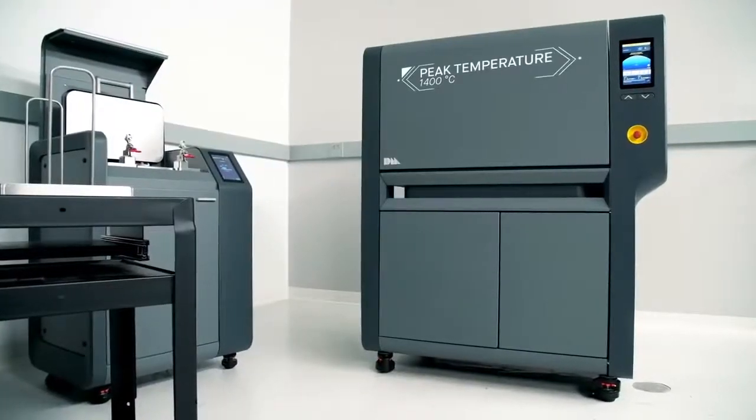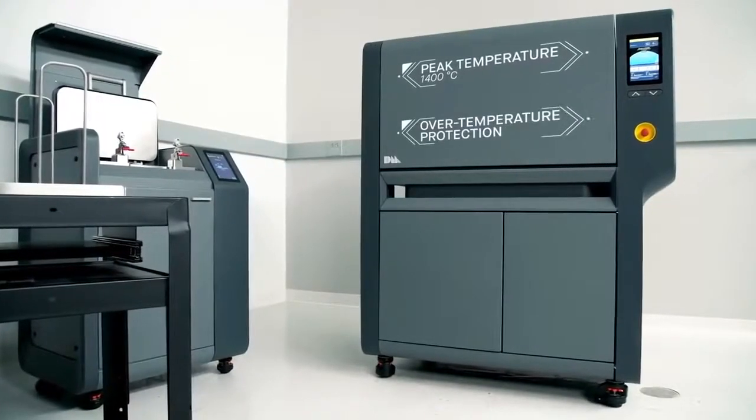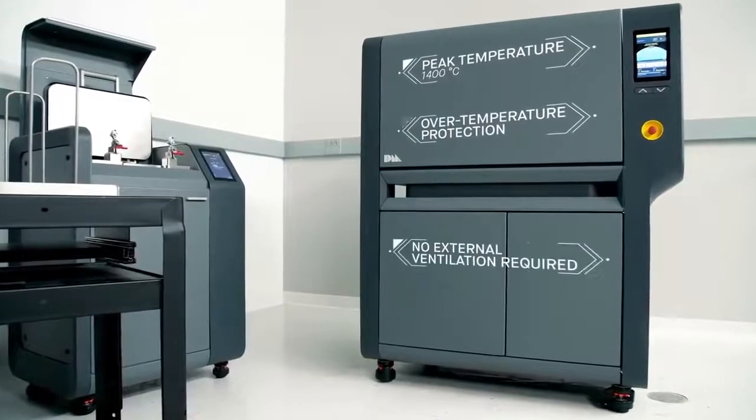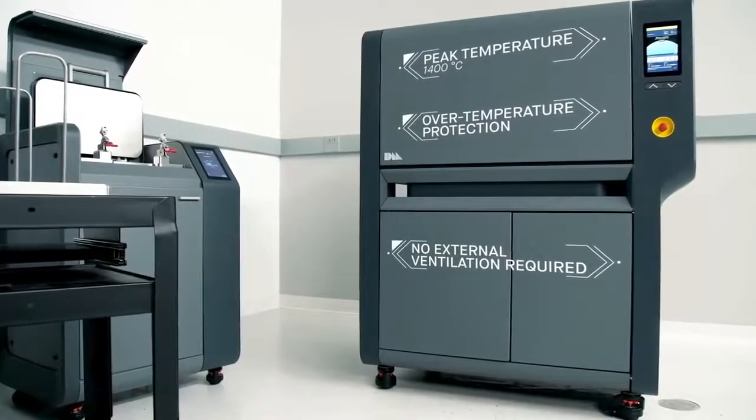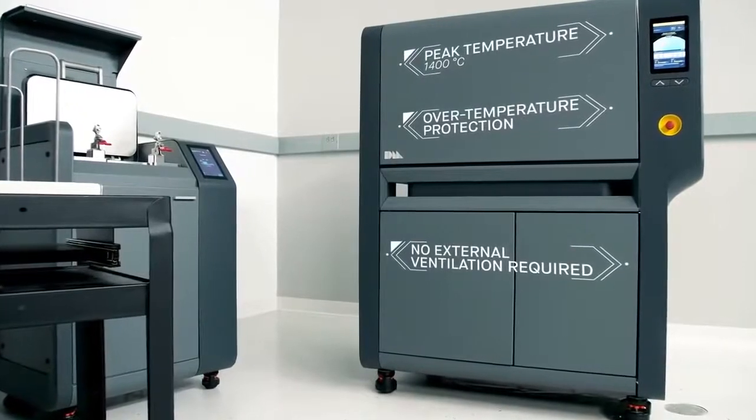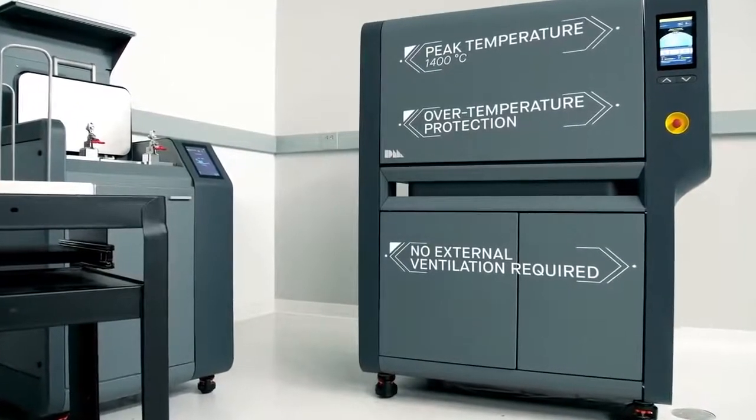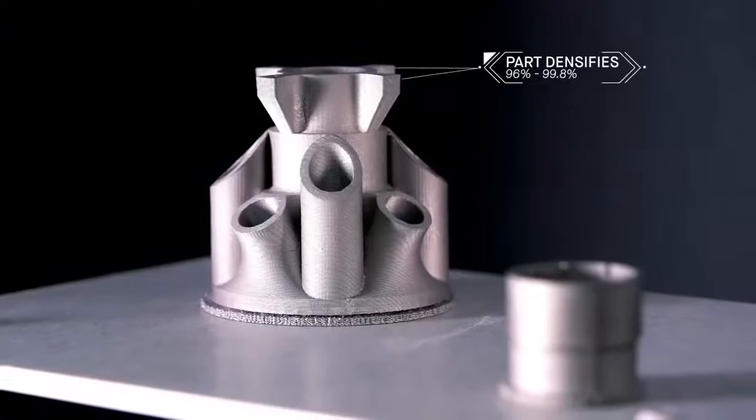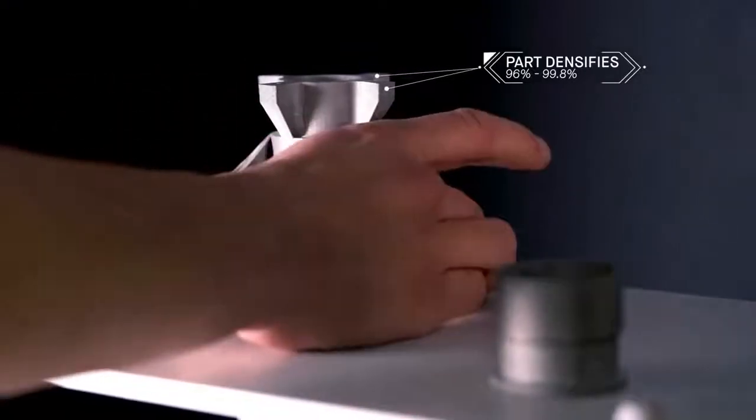Built-in temperature profiles are tuned to every build and material to ensure uniform heating and cooling. Heated to temperatures near melting, remaining binder is removed and metal particles fuse together, causing the part to densify up to 96 to 99.8%.